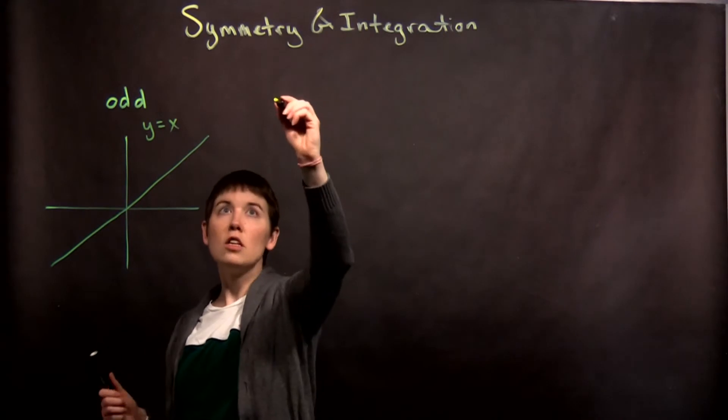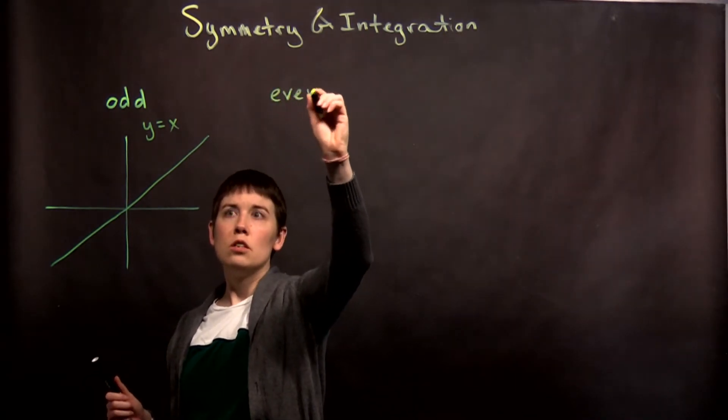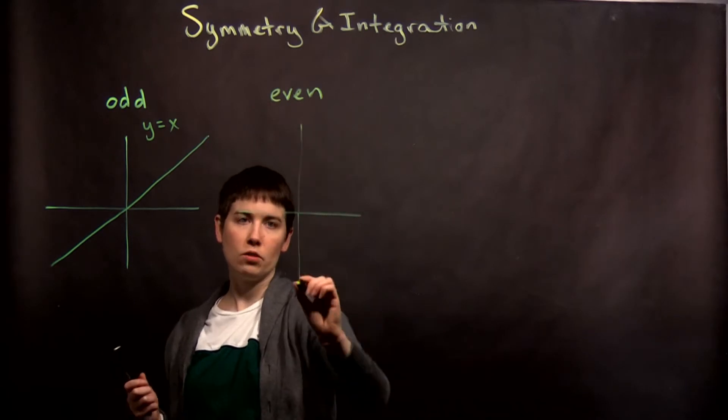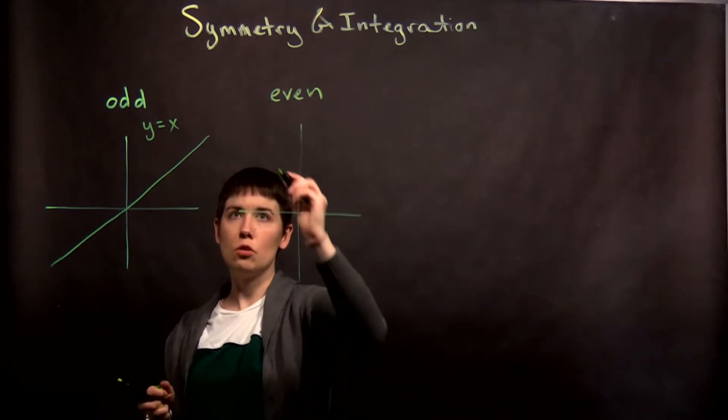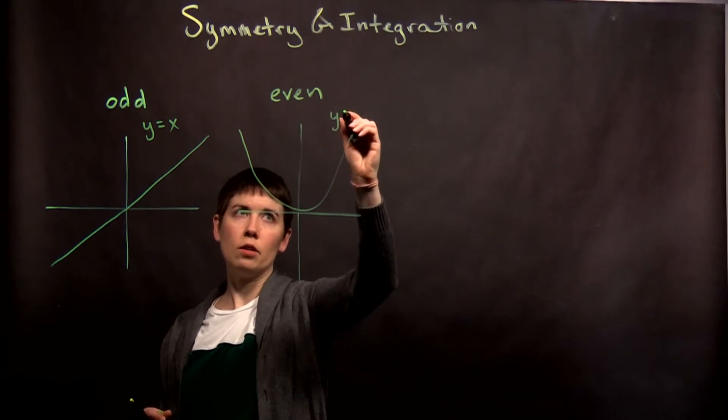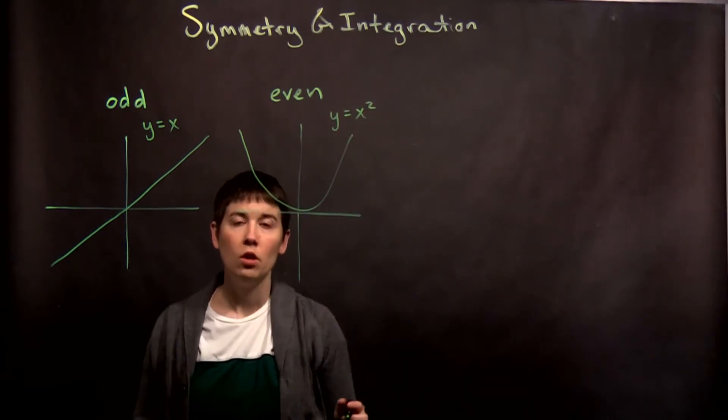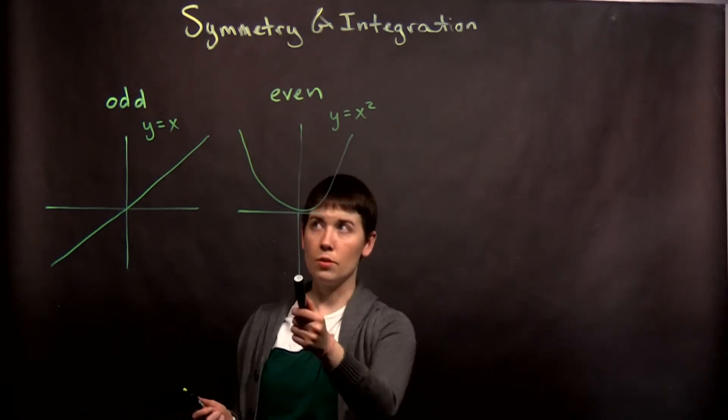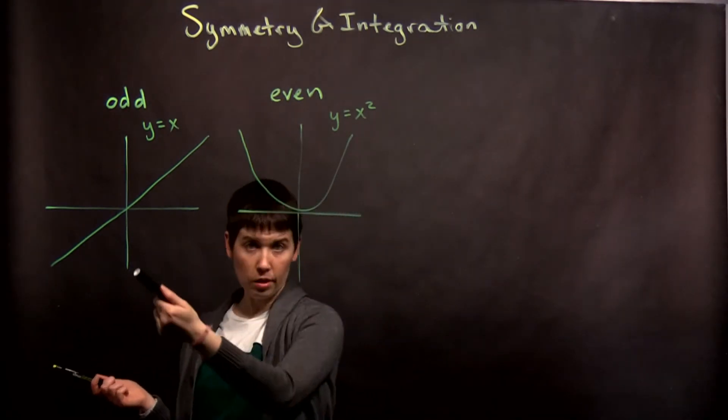An example of even symmetry is when your two values, your negative and your positive x values are actually equal. So for instance y equals x squared. So cosine would be even symmetry, sine is odd symmetry.